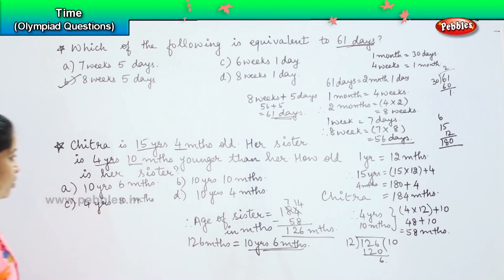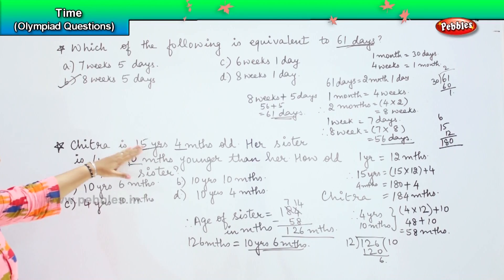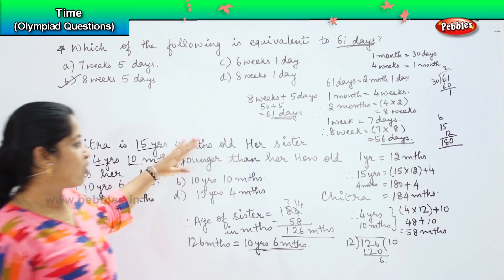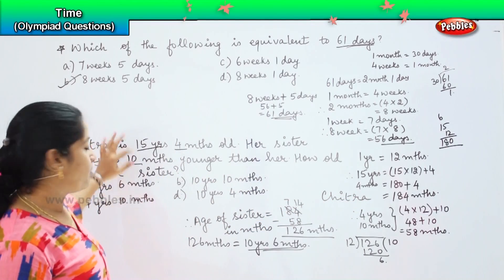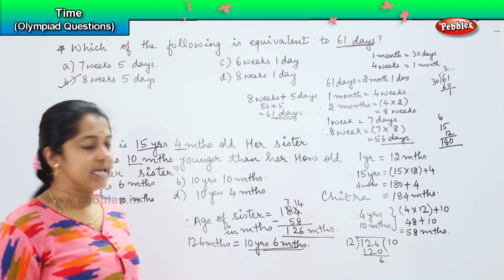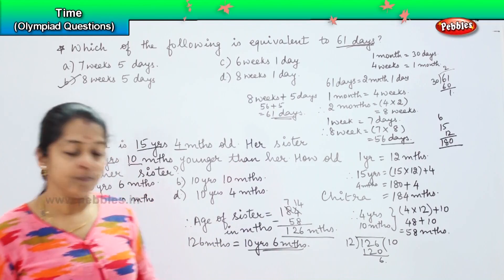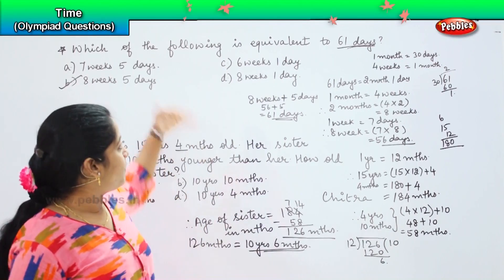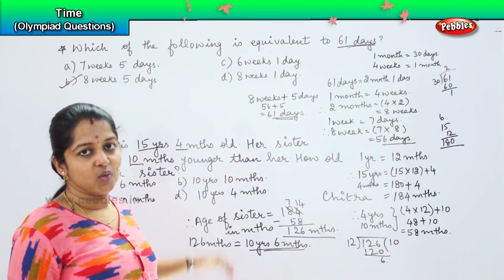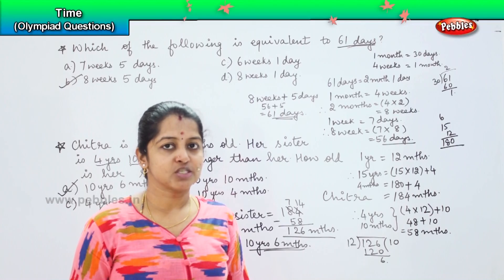The answer is option A, 10 years and 6 months. Did you understand? We converted the years-and-months combination into months, found the difference, then divided by 12 to get the age in years. Both questions applied the same conversion formula. Shall we move to the next one?